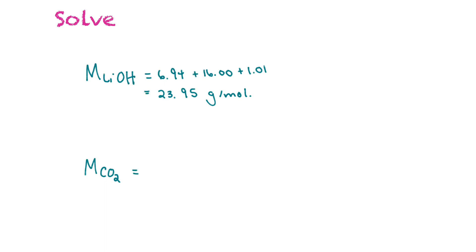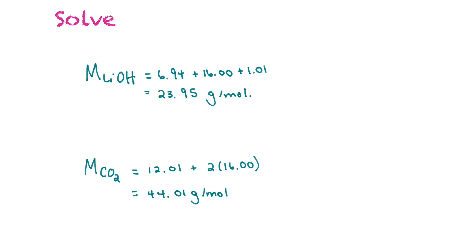Next, we need to find the molar mass of carbon dioxide, because we need to find how many moles of CO₂ we have so we can figure out how many moles of lithium hydroxide we need. That's equal to 12.01 + 2 × 16.00 = 12.01 + 32.00 = 44.01 grams per mole. Now we're ready to add values into our table.